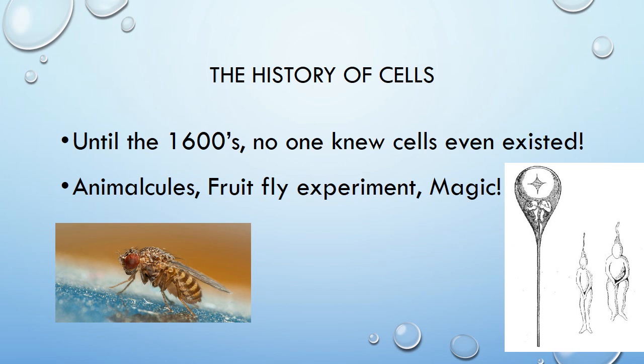The history of cells is kind of a funny one. Until about the 1600s, no one even knew cells existed. People had ideas that there were very small things, but weren't sure if they were alive. One of the theories about what these small things were called them 'animacules.' There's a picture on the right-hand side. One idea of where babies came from was that there were fully-formed adults inside these little cells that grew until the baby was born — essentially a little version of a full-grown adult. We obviously know now that's not true.